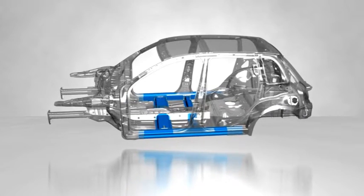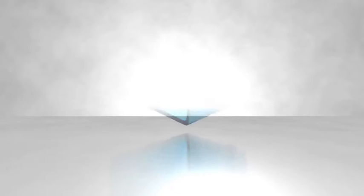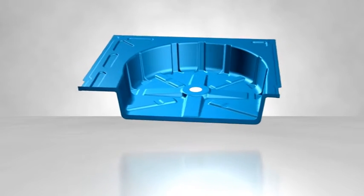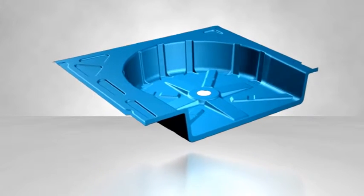Aluminum profiles cut the weight. By using nanocomposites in the manufacture of the spare tire well, body weight is cut by an additional 2.7 kg.